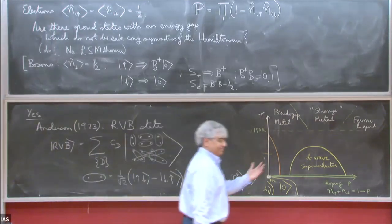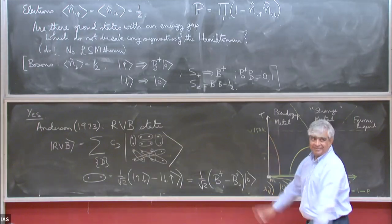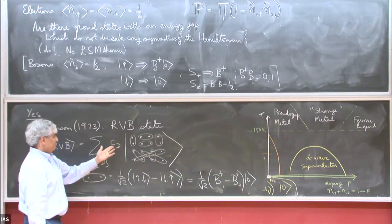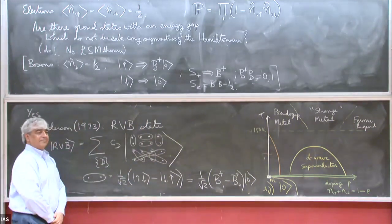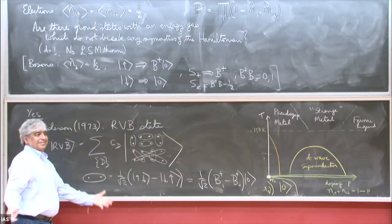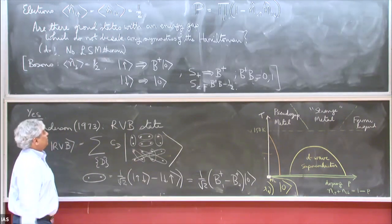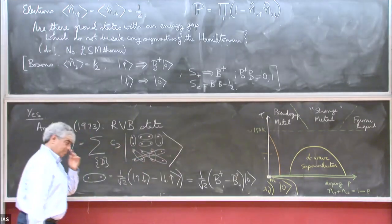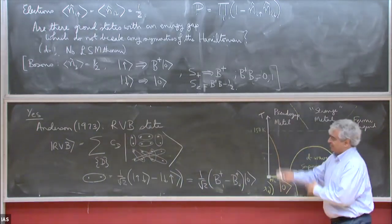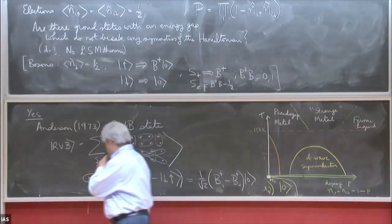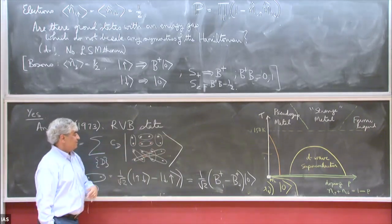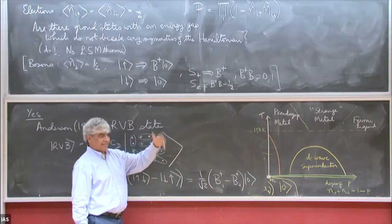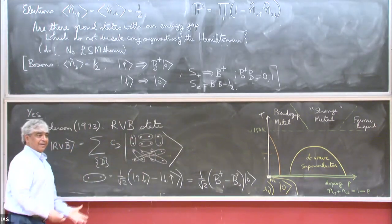The average density of bosons is one half because there are two sites and only one boson. This is about as much as Pauling and Anderson said in those days — there's a huge variety of such phases depending on what the c_D coefficients are. If you want a state with an energy gap, we believe the probability of getting longer bonds falls off exponentially with distance, but there are also gapless states. This wave function has long-range entanglement because these local constraints propagate through the entire lattice, leading to topological characteristics.